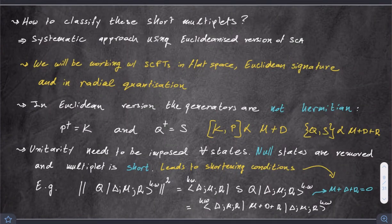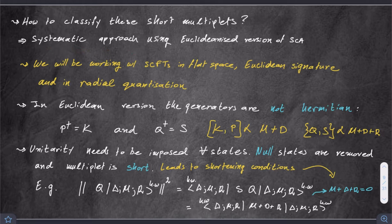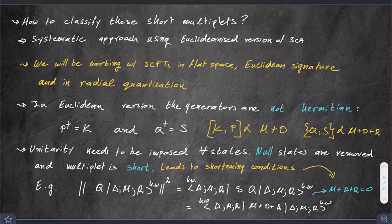How do you classify these short multiplets? There is a systematic approach using a Euclideanized version of the superconformal algebra. We will be working with superconformal field theories in flat space, choosing Euclidean signature, and ordering our operators using radial quantization.